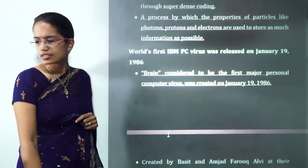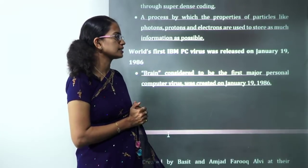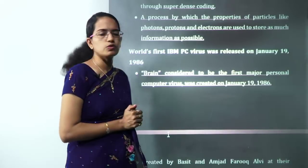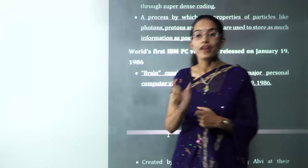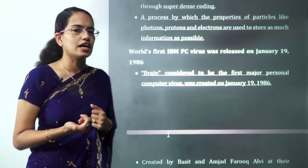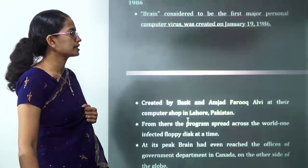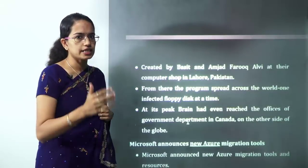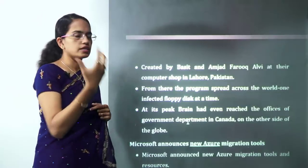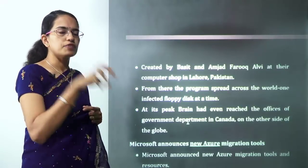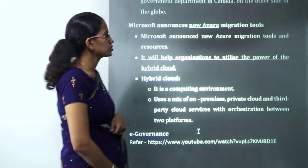The world's first IBM PC virus was released in 1986 and was named 'Brain.' The name does not appear to be a virus name, so be careful while marking answers. This virus was discovered in Lahore for the first time and gradually spread to government offices in Canada and then throughout the globe. The first infection was through the floppy drive.